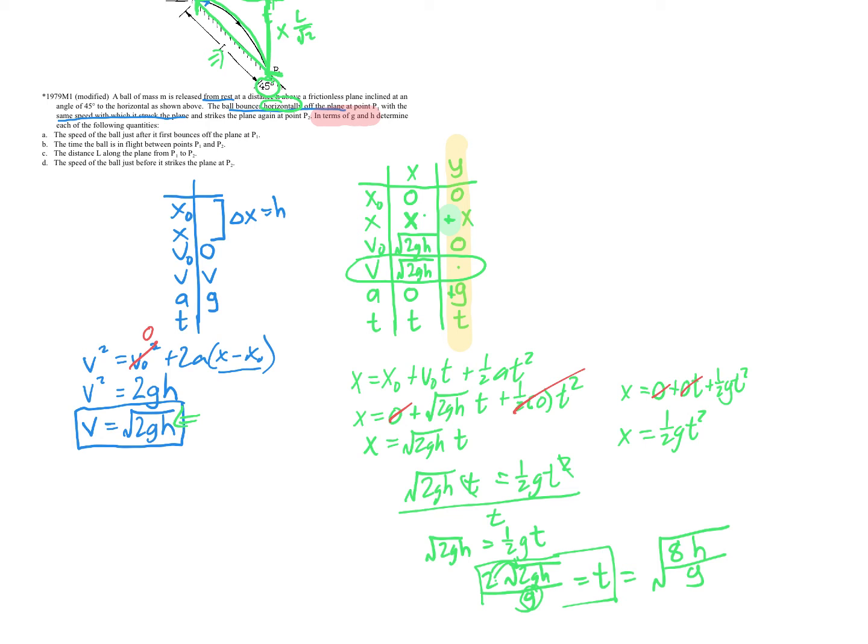So letter C here asks us to find the distance L. Well, we know the speed and we know the time. And so with the speed and the time, we can actually calculate X now. We can calculate the distance. You could use this guy right here or you could use this one over here. It doesn't really matter. Either one of those is appropriate. You're going to plug the time in. And once you plug the time in, you should then be able to calculate.